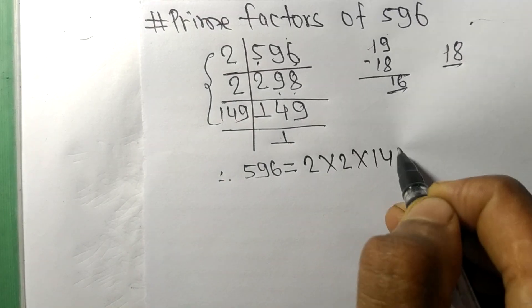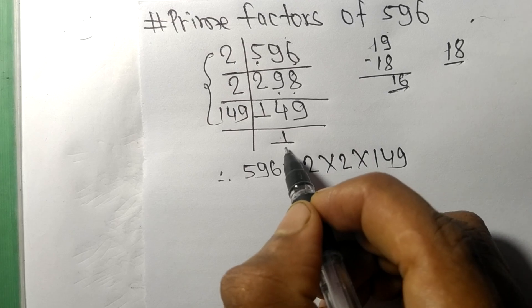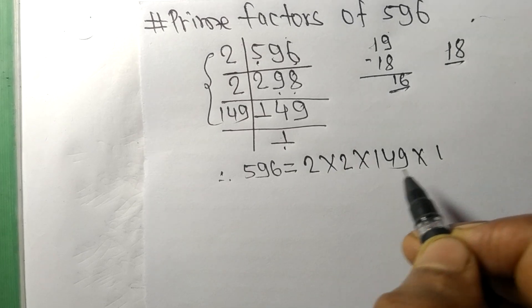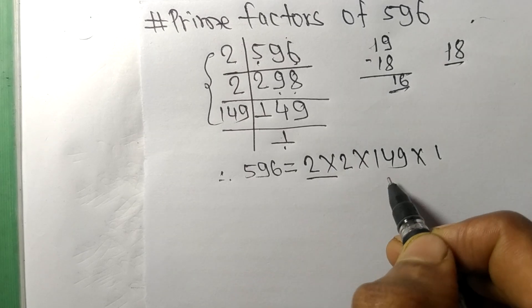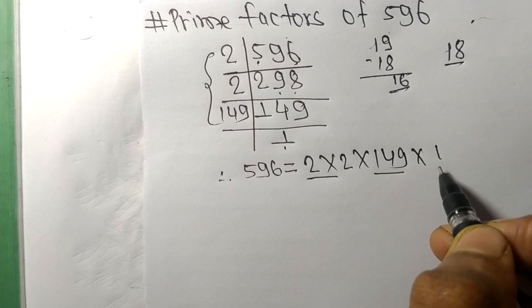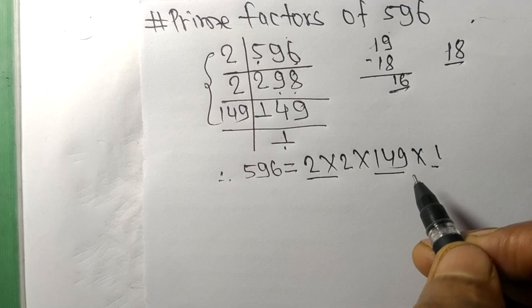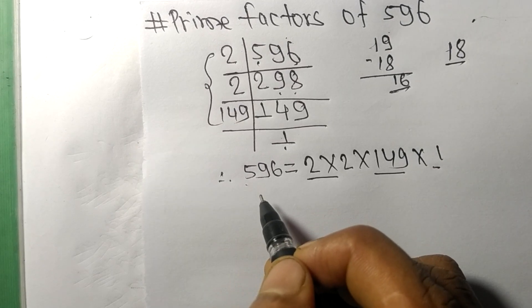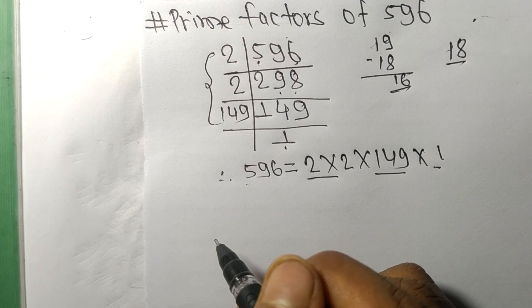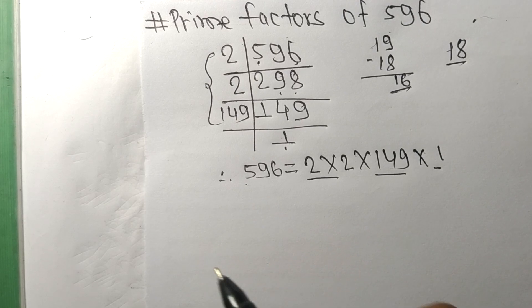times 149 times 1. So 2, 2, 149, and 1 are the prime factors of 596. That's all for today, and thanks for watching.